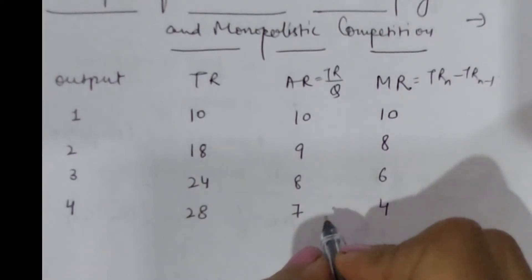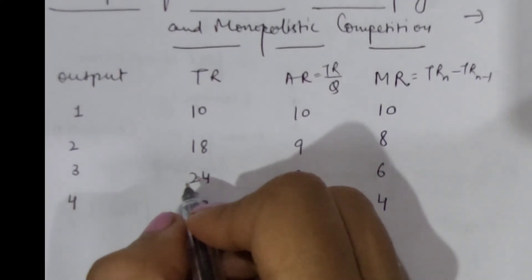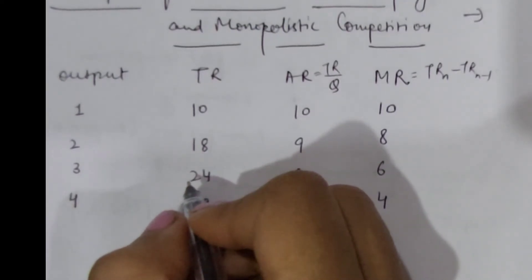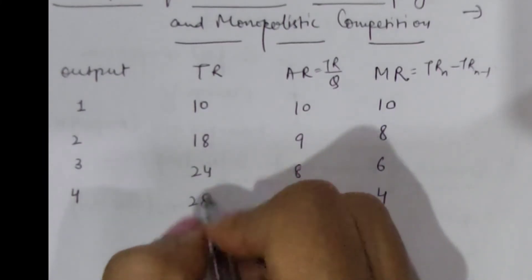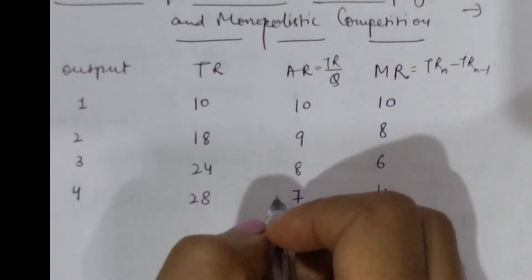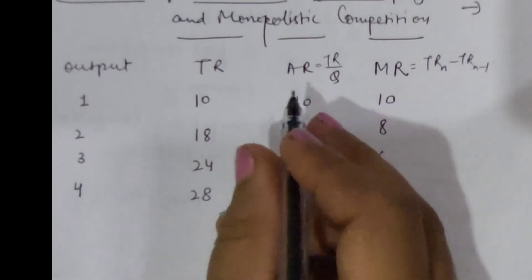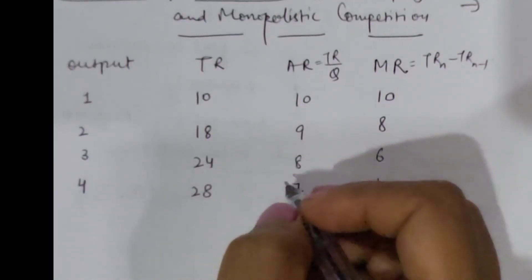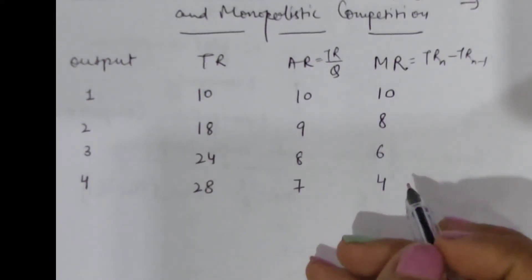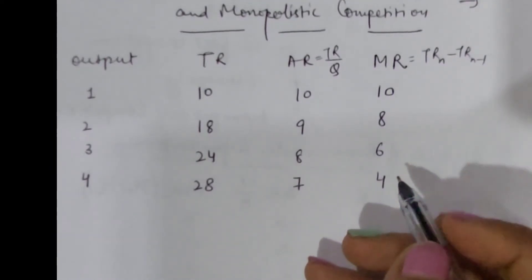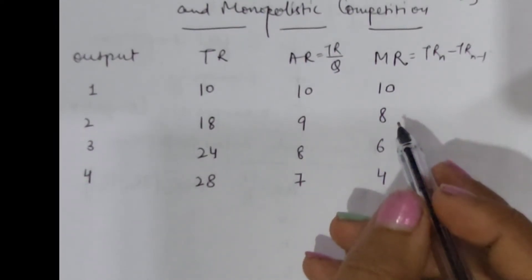We can conclude that total revenue is increasing but at a decreasing rate, which means if a monopolist wants to sell more of the commodity, he has to lower down its price accordingly. So as sales increase, AR tends to decrease. If AR is reducing, then marginal revenue must also reduce. Average revenue is decreasing and marginal revenue is also decreasing, even more than the average revenue.